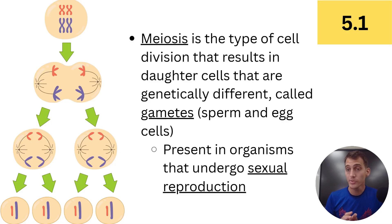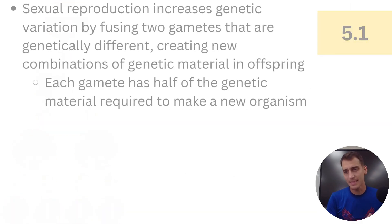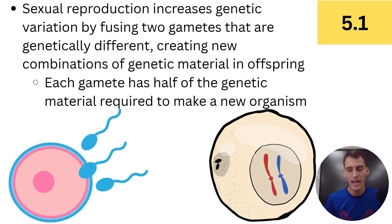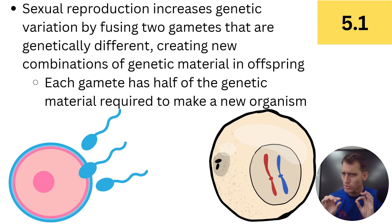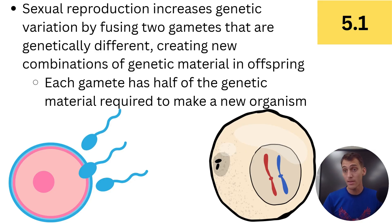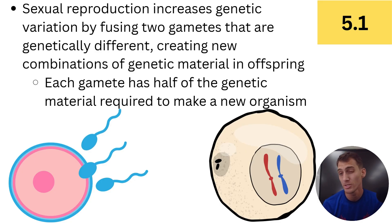The offspring has 50% of dad's DNA and 50% of mom's DNA, so the offspring is not the same as the parents — and that is absolutely critical. In mitosis, daughter cells are exactly the same as the parent cell, but in meiosis the offspring are genetically different from their parents. Sexual reproduction increases genetic variation by fusing two gametes that are genetically different, creating new combinations of genetic material in offspring.